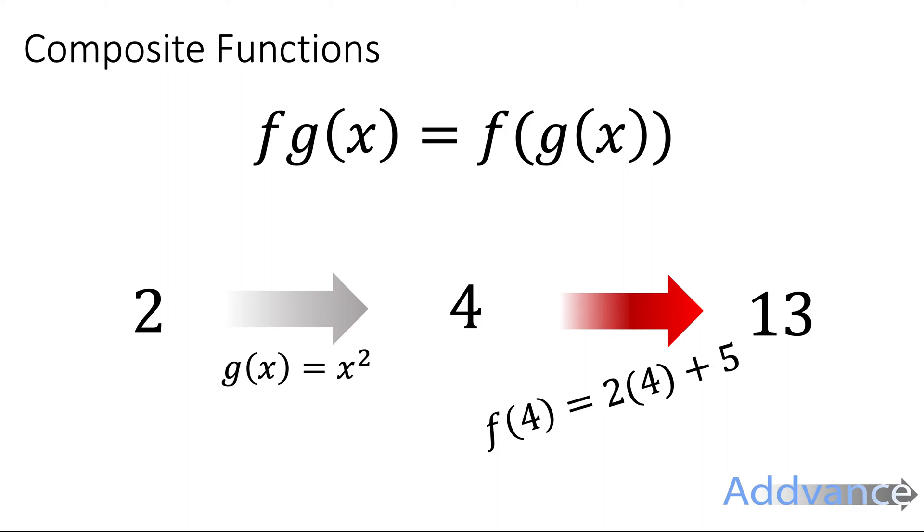And now because g is inside of f, we're going to put 4 into f of x. So 4 goes in: 2 times 4 plus 3, 2 plus 5 is 13. So what we do is put 2 into g of x, get an answer out, and then put the answer into f of x, because we're putting g of x into f of x and getting an answer. That's one way.